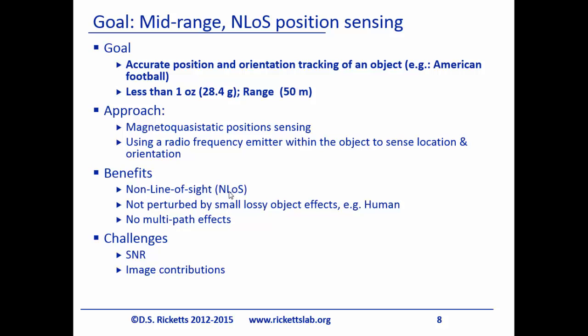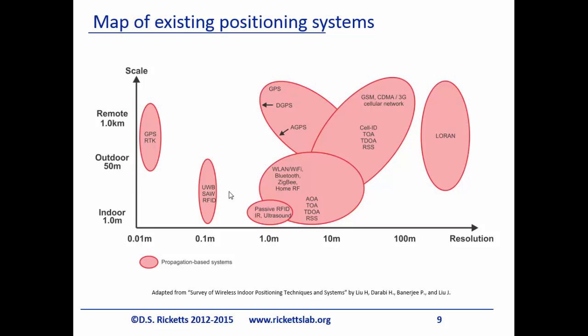The benefits are non-line-of-sight — we can see through people and through small metallic objects — and there's no multipath. For those of you who study radio and RFID, there are a lot of issues with multipath from waves bouncing off surfaces. There's no wave propagation here — the football emits a field that just propagates outward. The challenges are signal-to-noise ratio and image contributions from the ground, which I'll talk about.